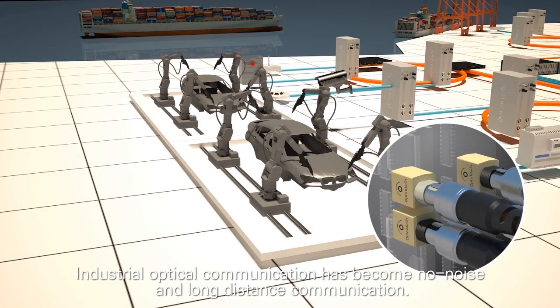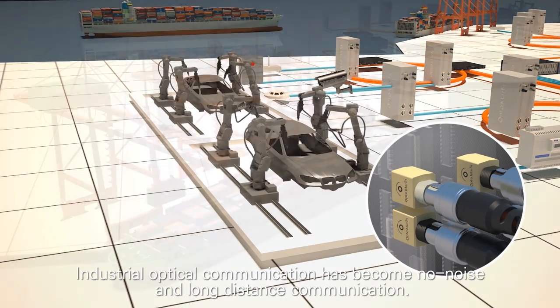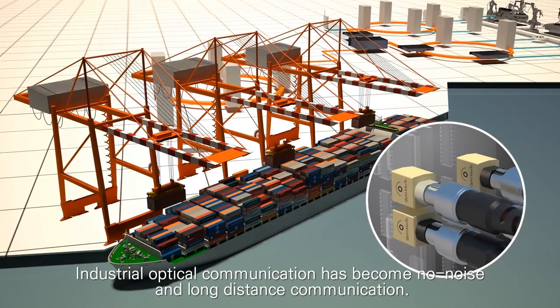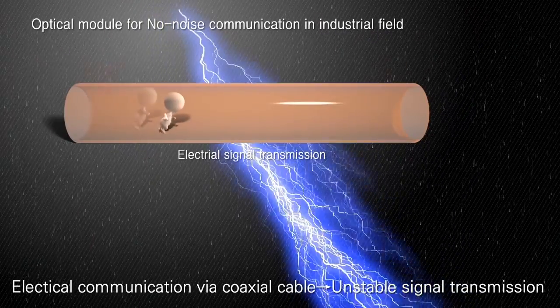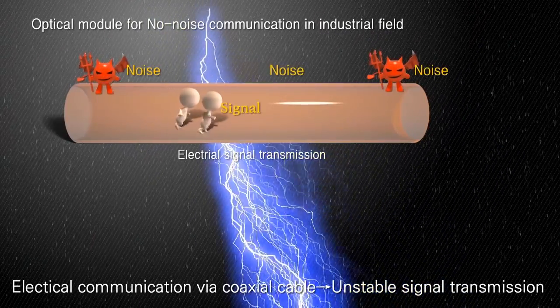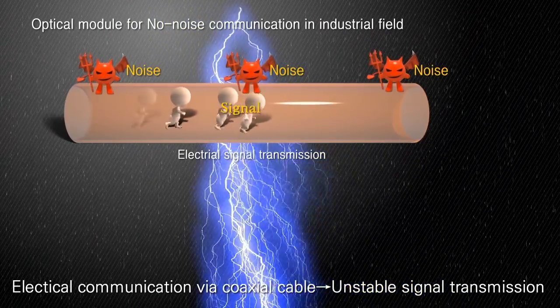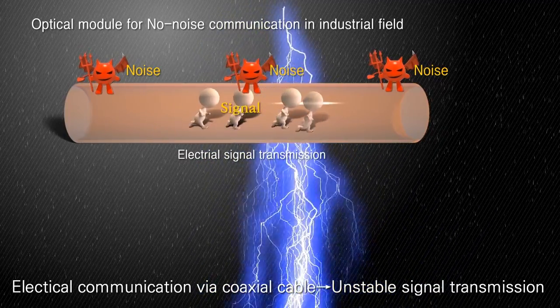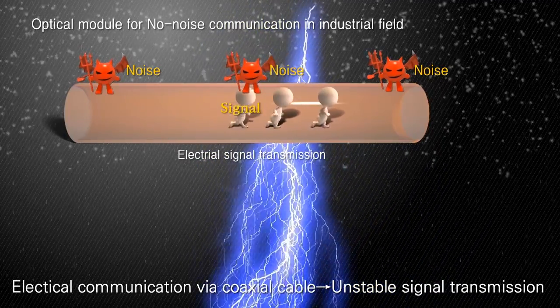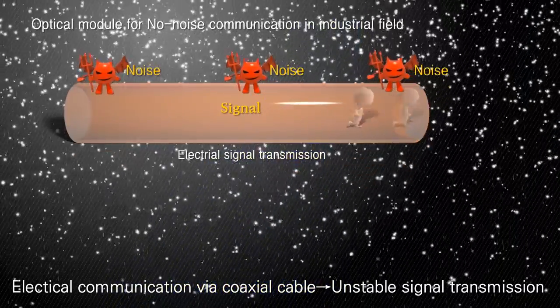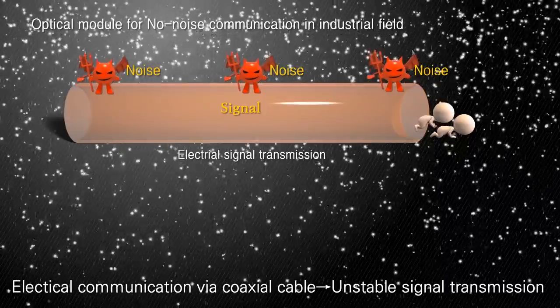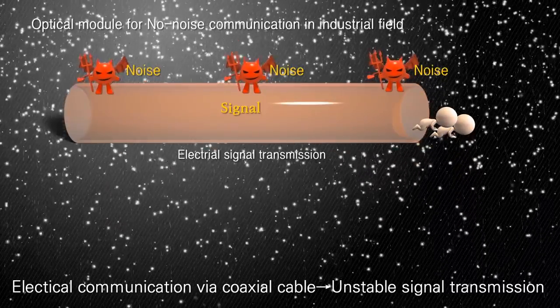Thanks to optical module, industrial optical communication has become more active, making smooth and no-noise long-distance communication possible between equipment. In the case of telecommunication via coaxial cable, it has been greatly affected by external stimuli such as electrical friction, heat, impact, and so on in extreme industrial environment because of electric current characteristics, frequently resulting in failures of equipment caused by noises.